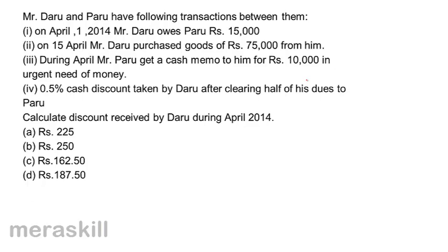Mr. Daru and Paru have the following transactions. On April 1st, Mr. Daru owes Paru Rs. 15,000. On 15th April, Daru purchased goods for 75,000 from him. During April, Paru gets a cash memo from him for Rs. 10,000 in urgent need of money. 0.5% cash discount taken by Daru after clearing half of his dues to Paru. Calculate discount received by Daru during April 2014. A, Rs. 225; B, Rs. 250; C, Rs. 162.50; and D, Rs. 187.50.